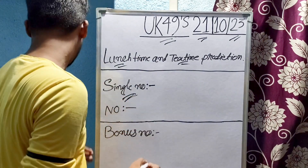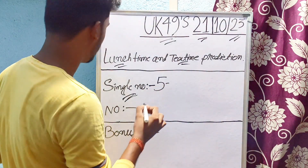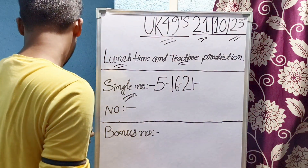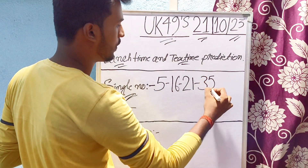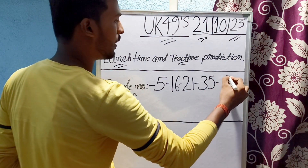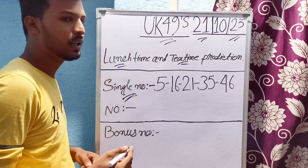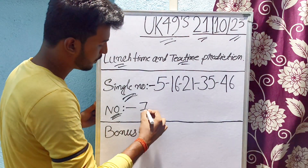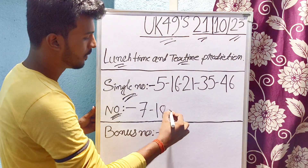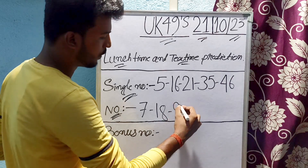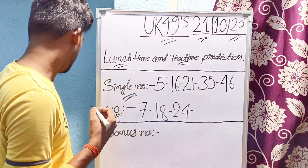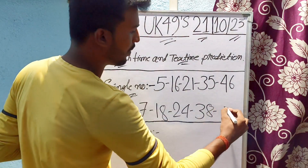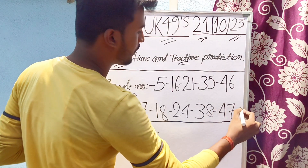Lunchtime and tea time Partition single number: number 5, number 16, number 21, number 35, and number 46. UK 49 lunchtime and tea time second Partition single number: number 7, number 18, number 24, number 38, and number 47.